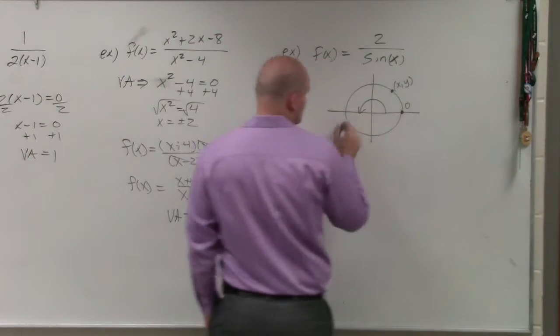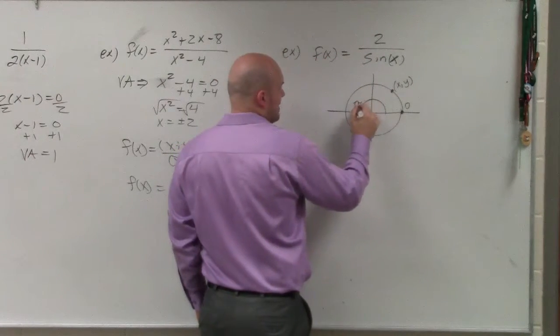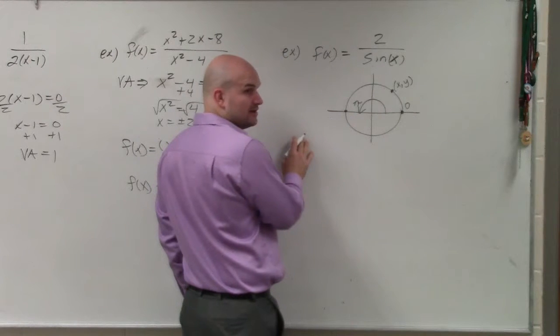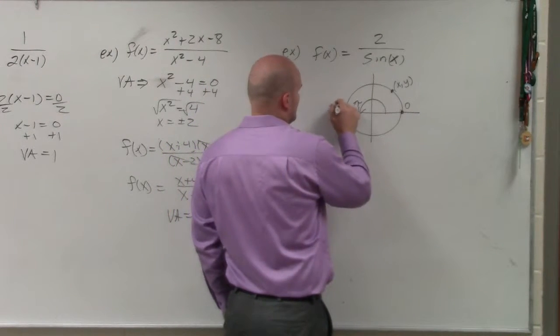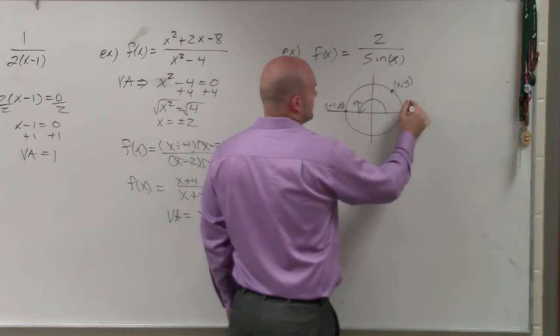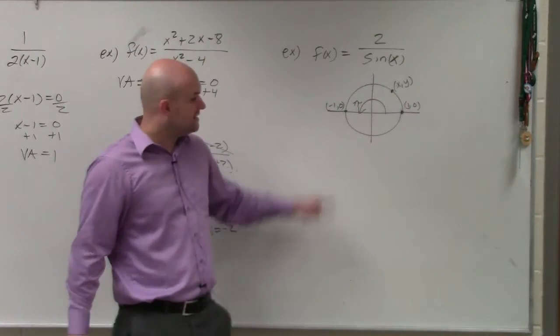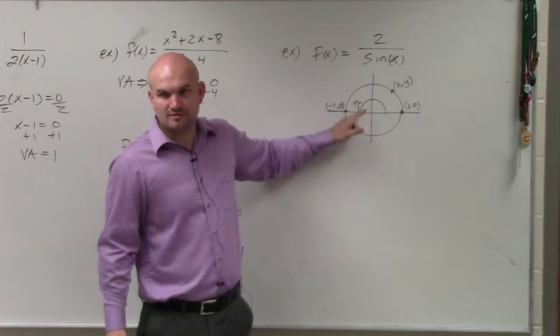And at this angle, which is pi, the sine value is 0 as well. Would everybody agree with me? The y-coordinate is 0, right? Negative 1 comma 0, 1 comma 0. And then what I can see is this just keeps on repeating itself, correct?